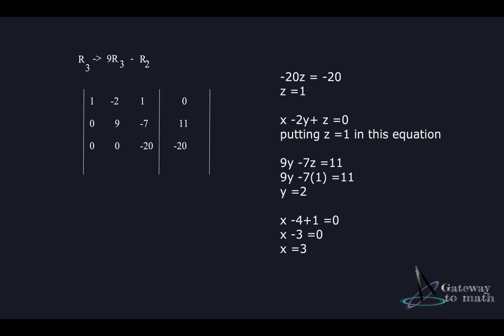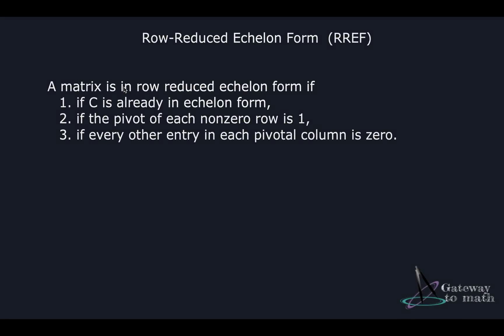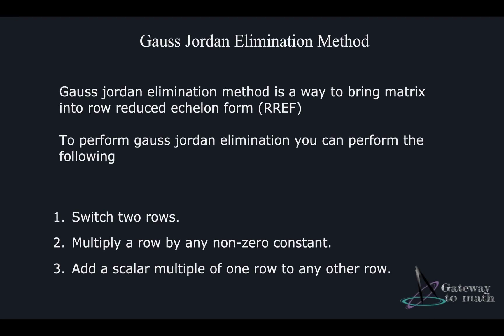Going back to the previous example: in row echelon form, the entry above a pivot didn't need to be zero, which was acceptable. But in row reduced echelon form, entries above the pivot in a pivotal column must also be zero. Gauss elimination brings a matrix to row echelon form, while Gauss-Jordan elimination brings a matrix to row reduced echelon form. These are two methods for reducing a matrix to find solutions of linear equations.